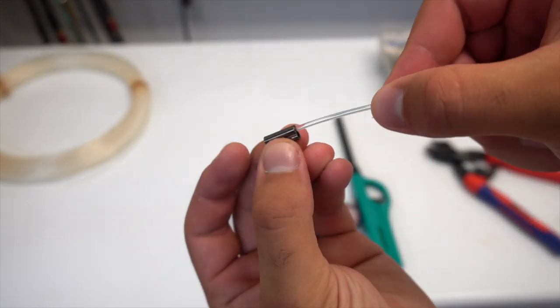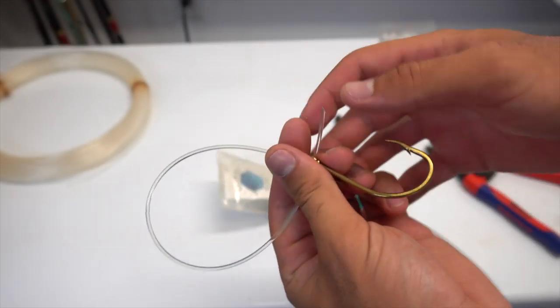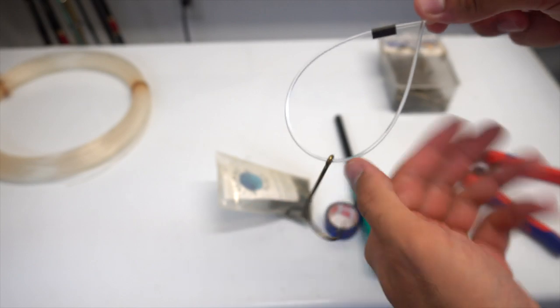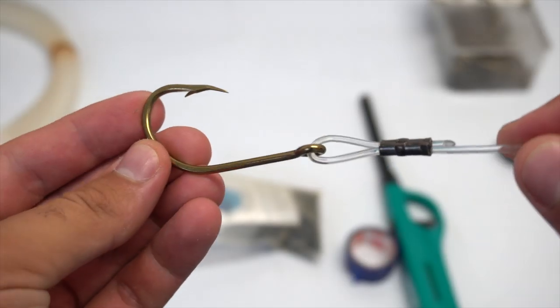As for attaching your hook, all I do is a solid crimp connection where you just feed the mono through the crimp, put it through the eye of the hook and then feed it back through the other end and crimp it down in each side.